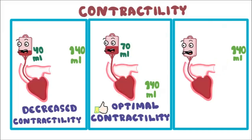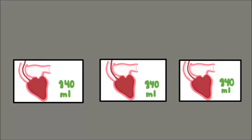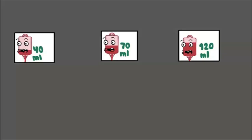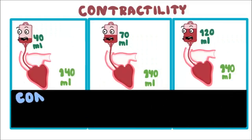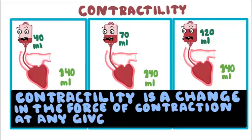When the last heart contracts, suppose it pumps 120 mL out of 140 mL. Having the same preload as the second heart, it pumps the most blood — this is because of increased contractility. To sum it up, all hearts have the same preload, and the only difference is the performance of the heart, in other words the force of contraction. This concludes that contractility by definition is a change in the force of contraction at any given preload.